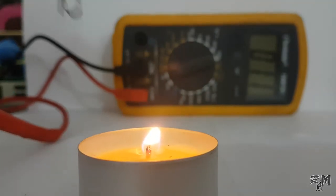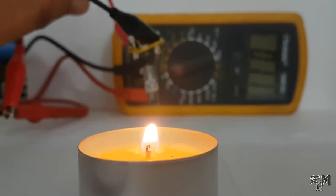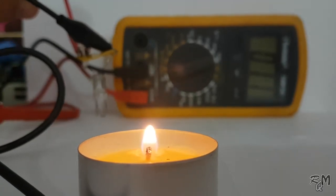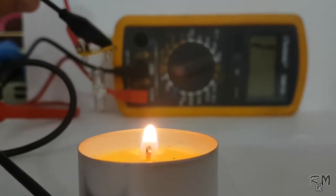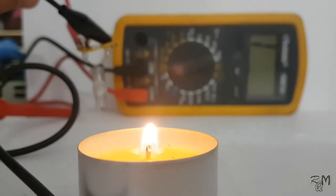Now take the bi-metallic contact away from the flame and observe resistance on the multimeter. It starts to increase towards infinity, which shows the bi-metallic contacts become open.